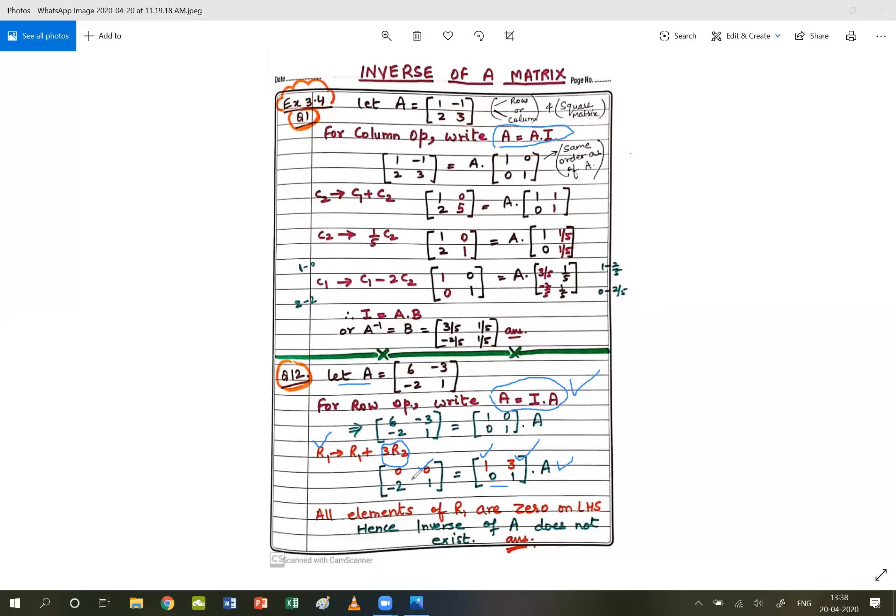We have to write this line. We will not write any operation. We will write: all elements of row 1 are zero on the left-hand side. Hence, inverse of A does not exist. This line is very important. Without this, your answer will not be complete. You have to give this reason. You have to explain why inverse does not exist.